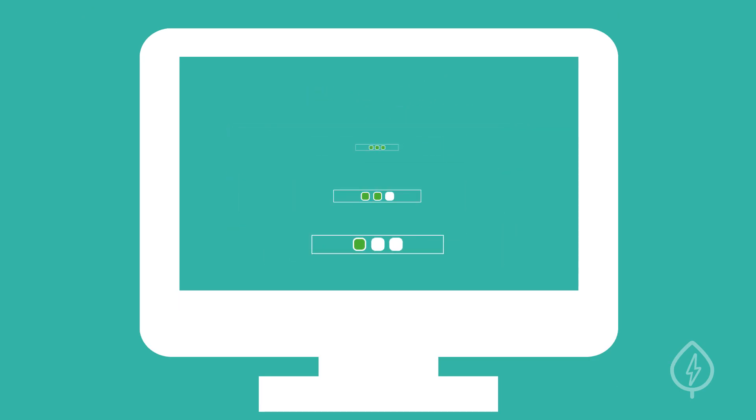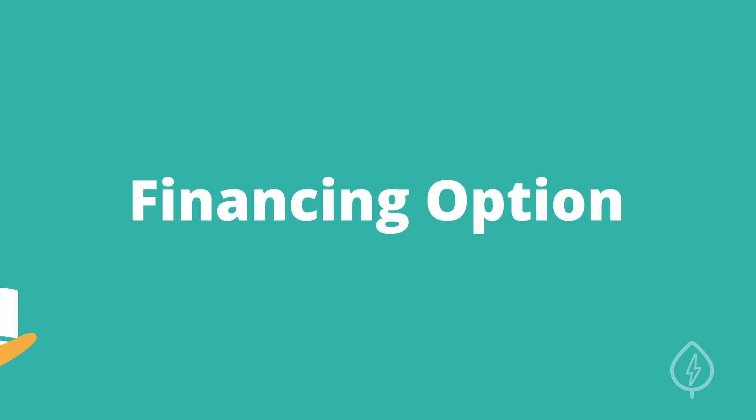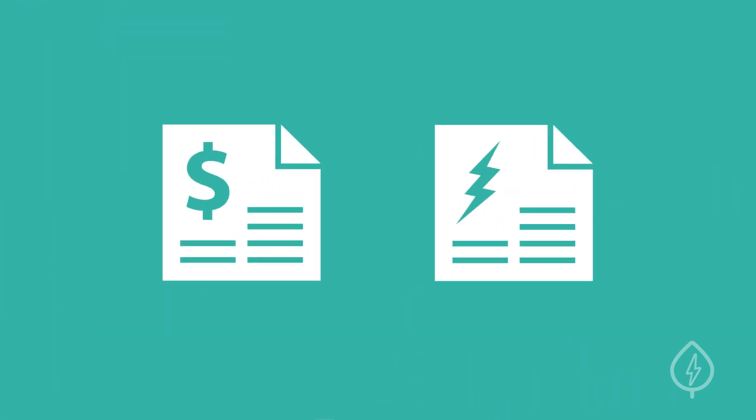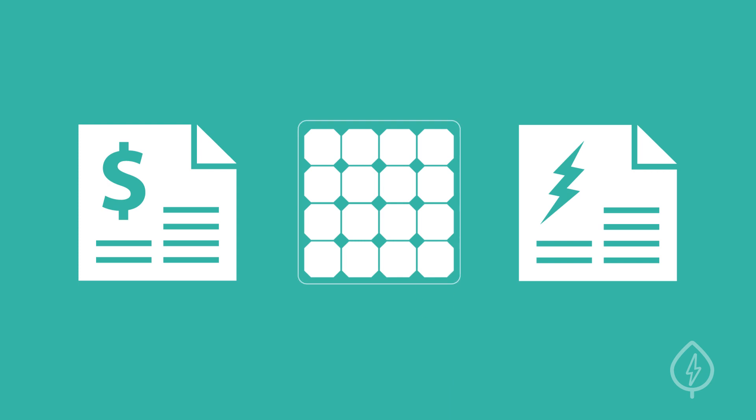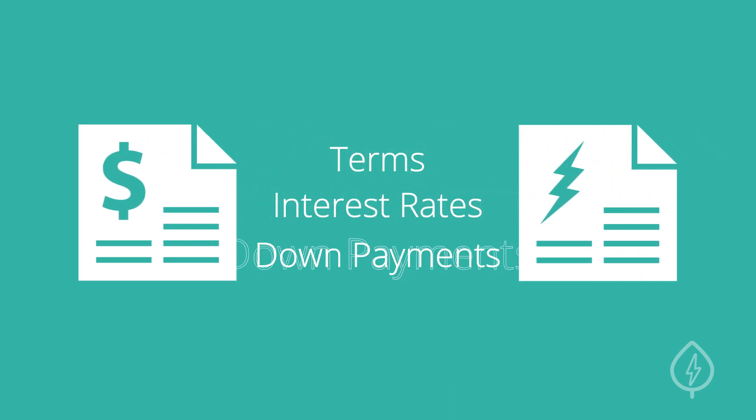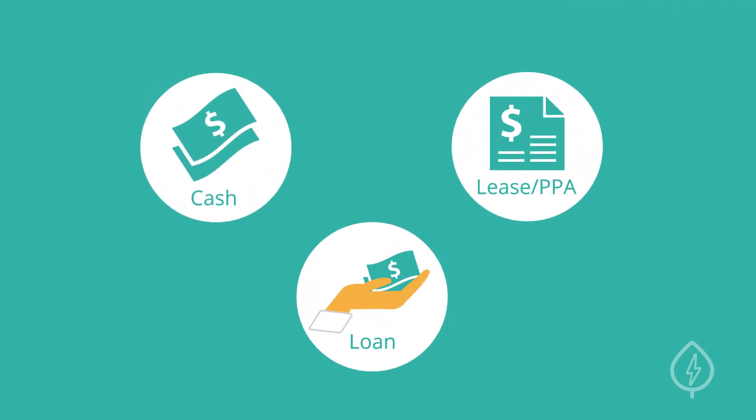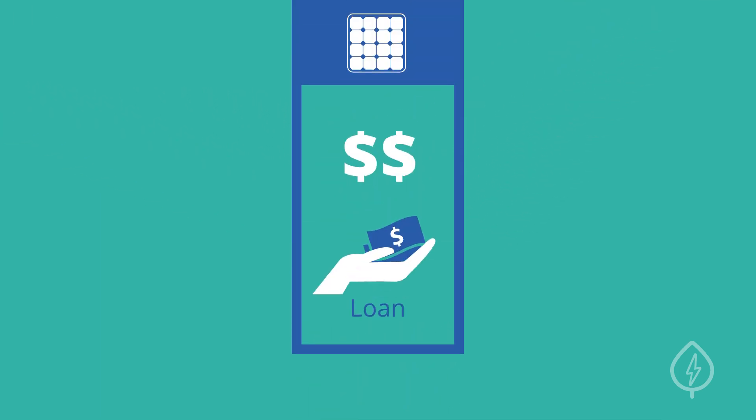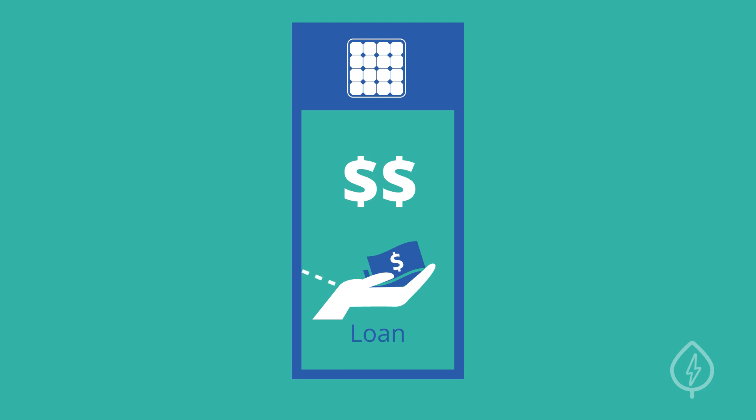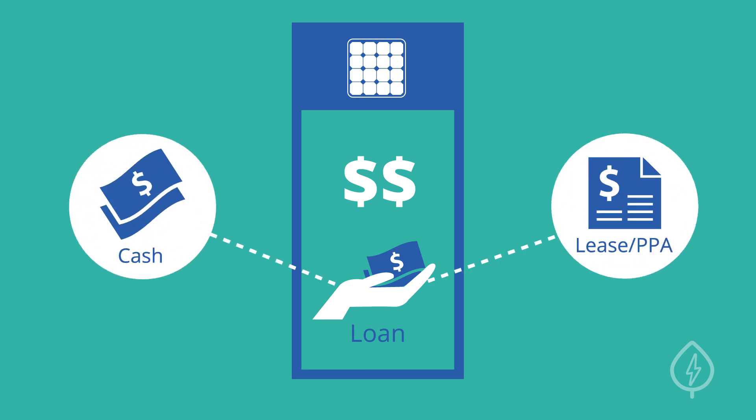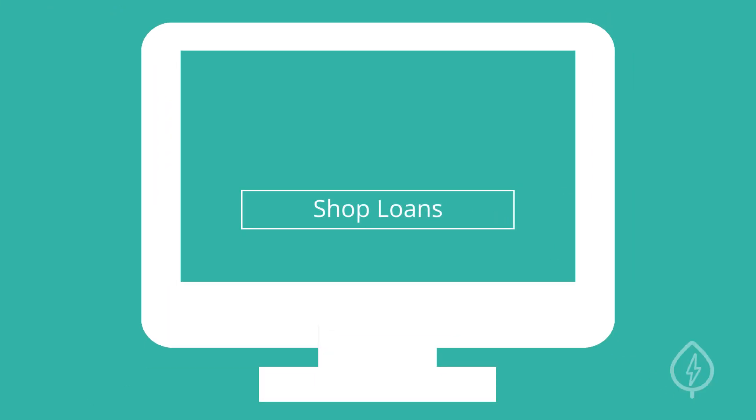Next, take a look at the financing option. There are many types of solar loans and leases available for solar installations, and they often have different terms, interest rates, and down payments. Remember that you have multiple options when it comes to paying for solar. If you don't like the financing option included in your quote, ask the installer about alternatives or shop for your own solar loans directly on EnergySage.